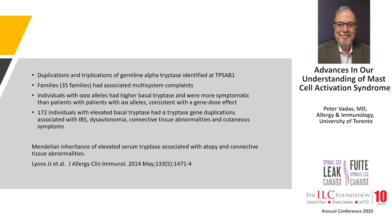The increase in tryptase is caused by duplication or triplication of the genes coding for alpha-tryptase at the TPSAB1 locus. In this study of families with multi-system complaints and elevated tryptase — hereditary alpha-tryptasemia, inherited from parents to children — individuals with three alleles had higher tryptase levels and were more symptomatic than those with gene duplication. In other words, the more copies of the gene a person has, the more symptomatic they're likely to be.